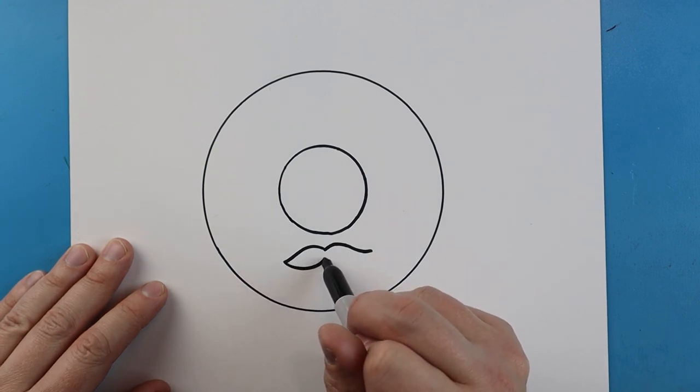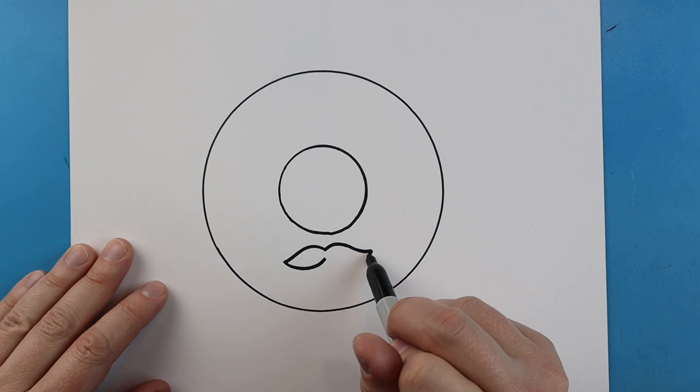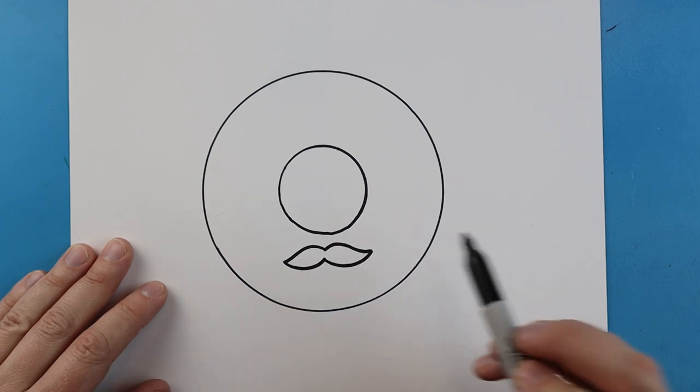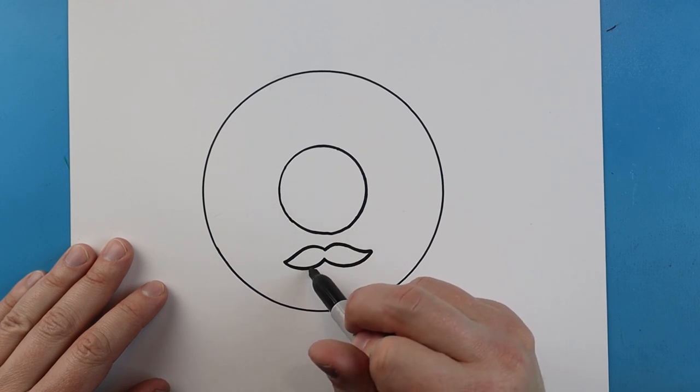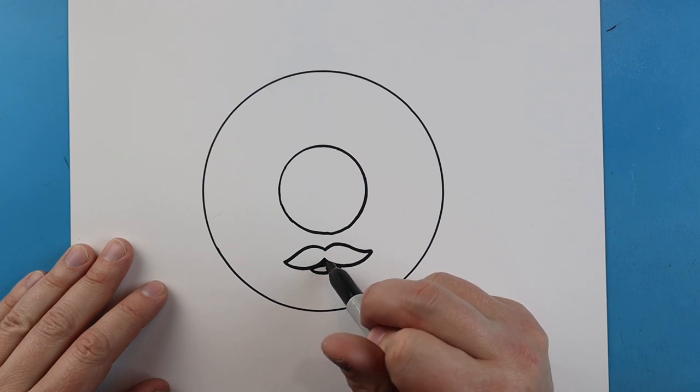I'm going to draw a little line that's going to come up. Next we'll do the same thing over here. I'll add a little smiley face shape for the mouth with a little line across for the tongue.